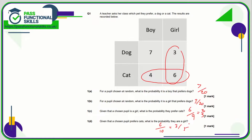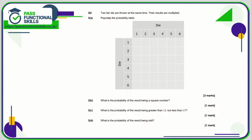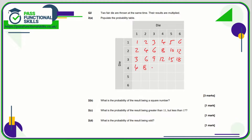Question two: two fair dice are thrown at the same time and the results are multiplied. We're going to populate the probability table. One times one is one, two ones are two, three ones are three — this is just the one times table. The two times table: two, four, six, eight, ten, twelve. The three times table: three, six, nine, twelve, fifteen, eighteen. The four times table: four, eight, twelve, sixteen, twenty, twenty-four. Five, ten, fifteen, twenty, twenty-five, thirty. Six, twelve, eighteen, twenty-four, thirty, thirty-six.